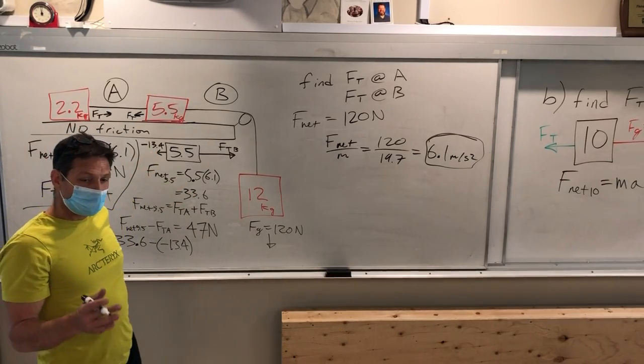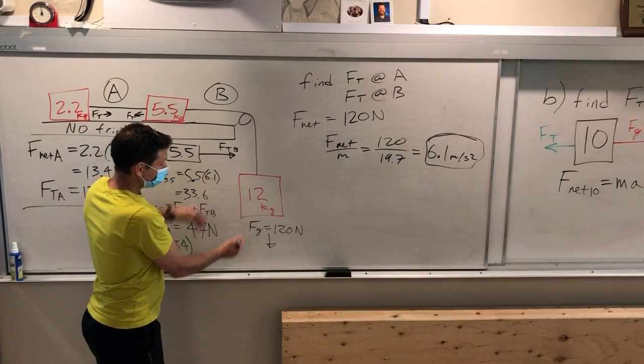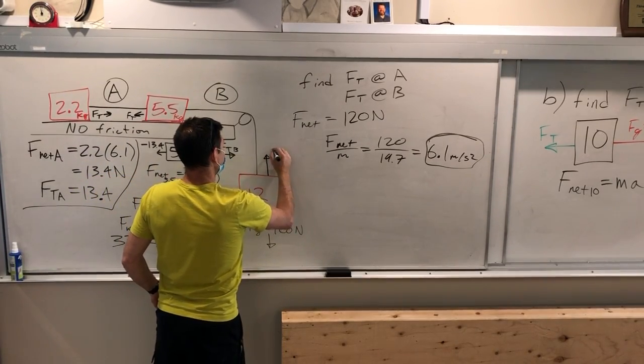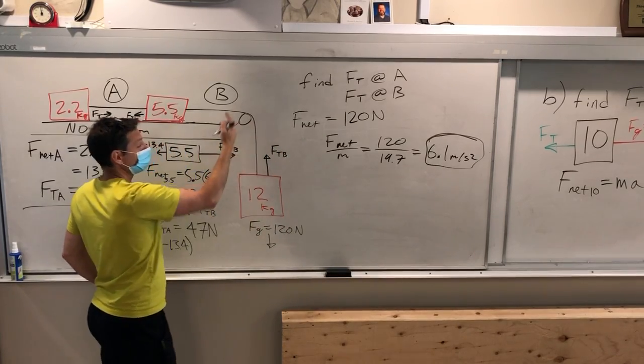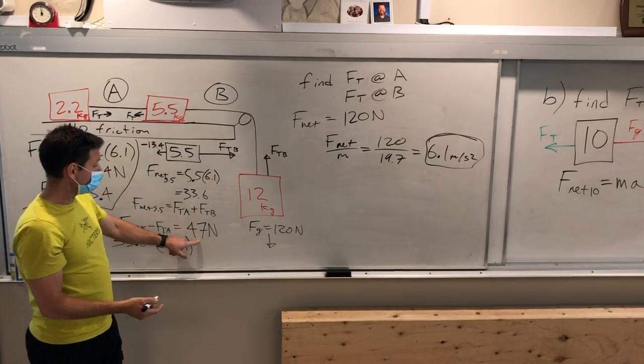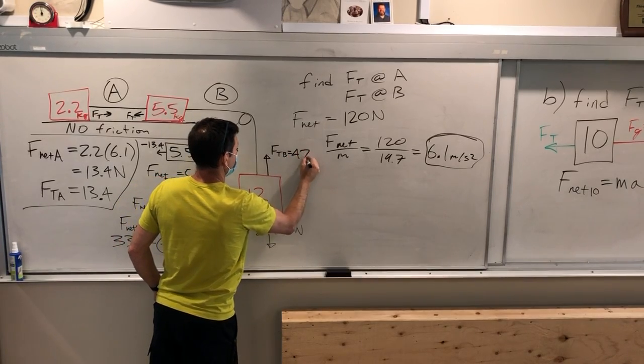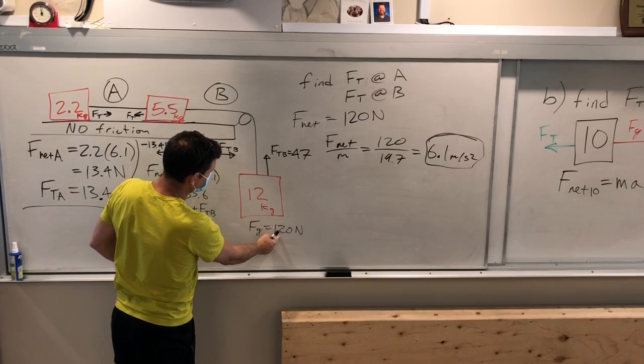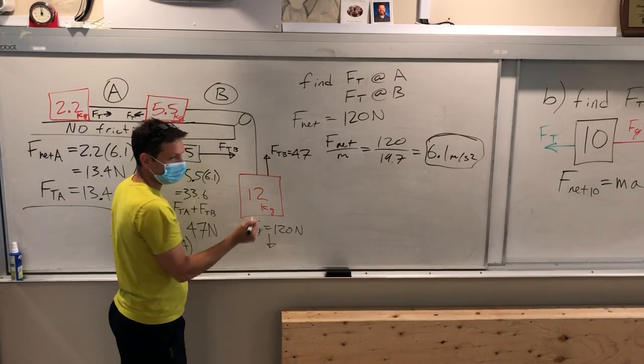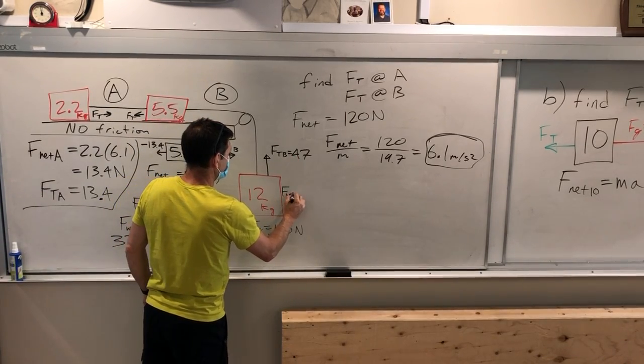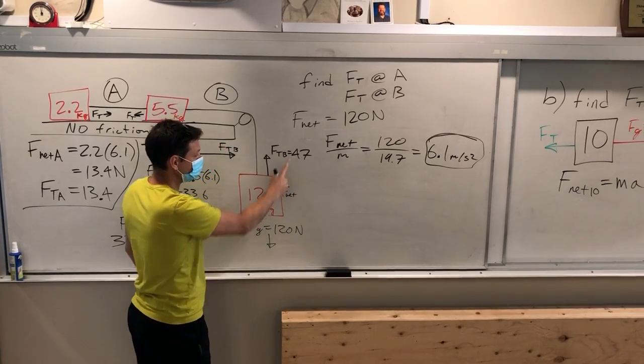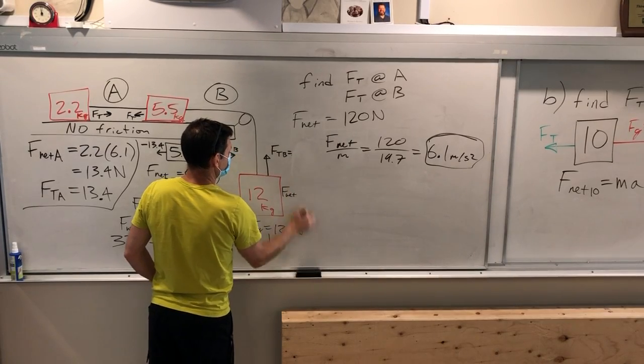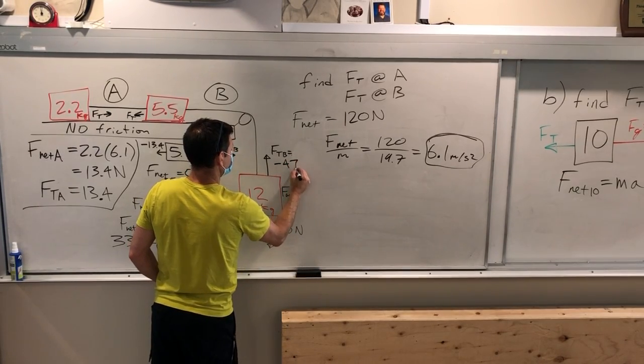Now, if you have time at the end and you want to check this, you go to this block and you say, well, I know this is 120 down. If my FTB, if my tension in B is correct, this is going to be 47. So my net force here is going to be 120 minus 47. Would you add them together? No. Well, yes. You add them together, but this is negative. I should write negative there. You're right. This is negative 47.